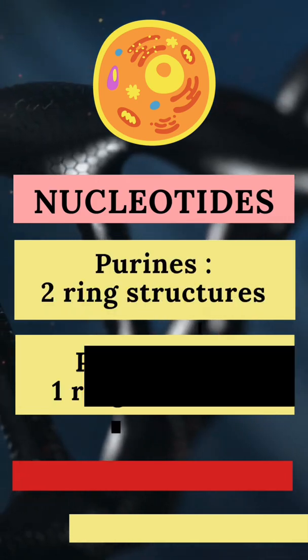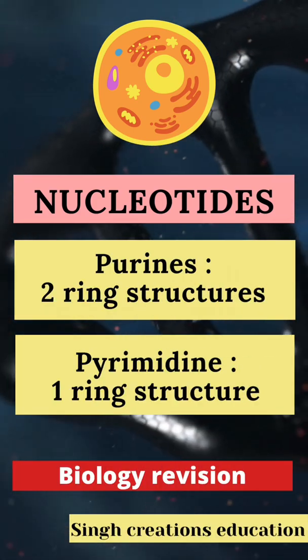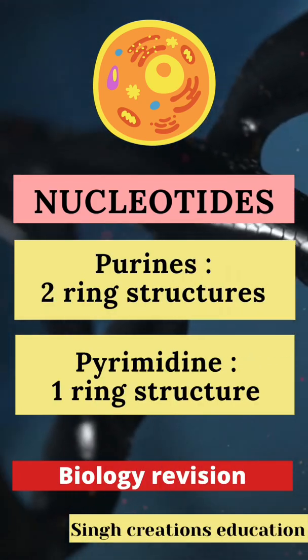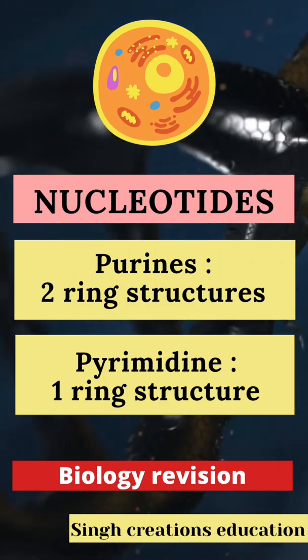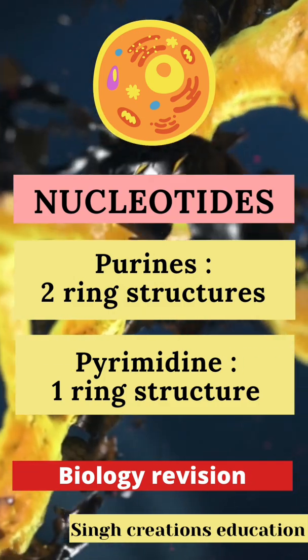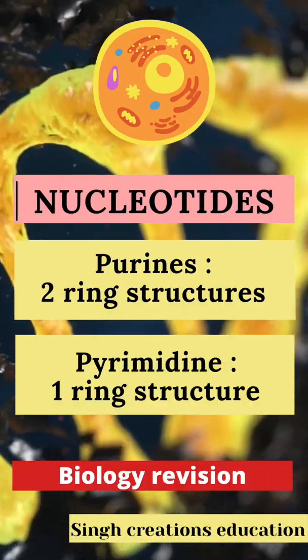These nucleotides have a ring structure. Purines have a two-ring structure and pyrimidines have a one-ring structure, which is very important to remember.